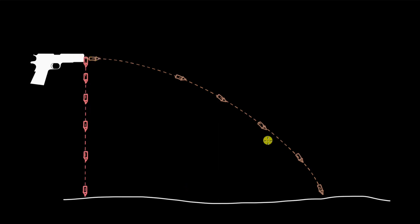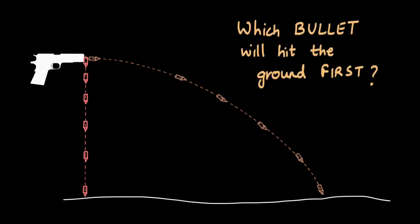A bullet is fired from a gun horizontally, and a second bullet is just dropped at the same time the first bullet is fired. The question is to figure out which bullet will hit the ground first. This is a question that we will answer in this video.